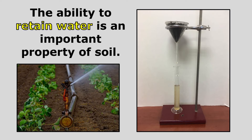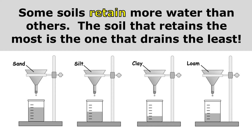On the right, you can see a simple experimental investigation that we can use to determine how much water a certain type of soil retains. We can determine how much water is retained by the soil by measuring the amount of water that drains from the soil. In this experimental investigation, we've poured equal amounts of water into four different types of soil. Some soils retain more water than others, and the soil that retains the most is the one that drains the least.